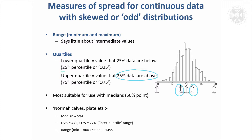Sometimes they're alternatively called the 25th percentile and the 75th percentile. The quartiles are a way of summarising the data, and if you remember that box and whisker plot, that had the quartiles on it and summarised these statistics: the minimum, maximum, median, and the quartiles. And between the quartiles, 50% of the data — the middle values — are going to lie.